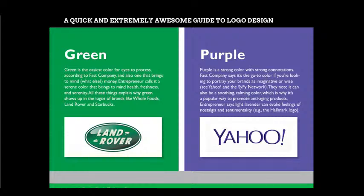Green is the easiest color for eyes to process, and it also brings to mind money and nature. Entrepreneur calls it a serene color that brings to mind health, freshness, and serenity. These things explain why green shows up in logos of brands like Whole Foods, Land Rover, and Starbucks. Purple is a strong color with strong connotations — Fast Company says it's the go-to color if you want to portray your brand as imaginative or wise, as seen in Yahoo and Sci-Fi Network.